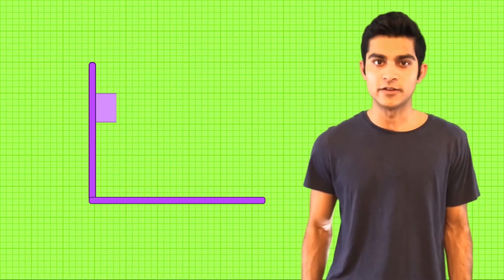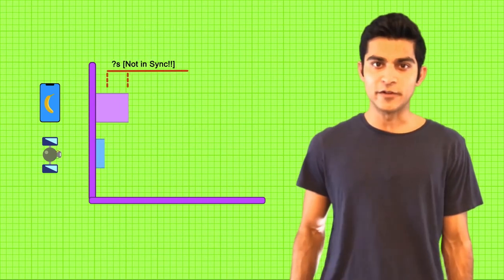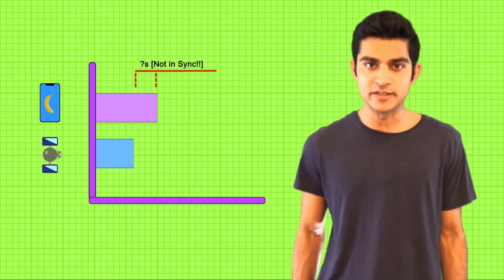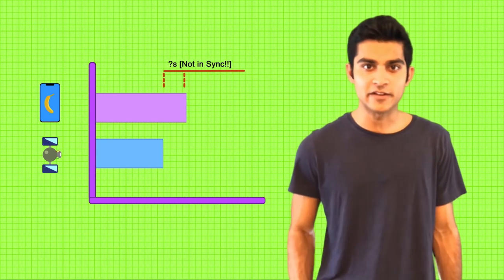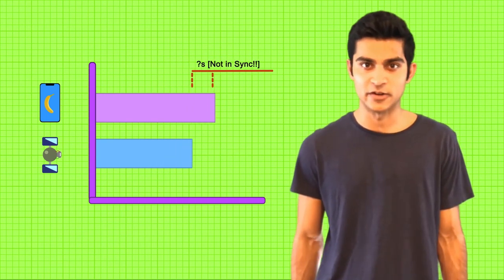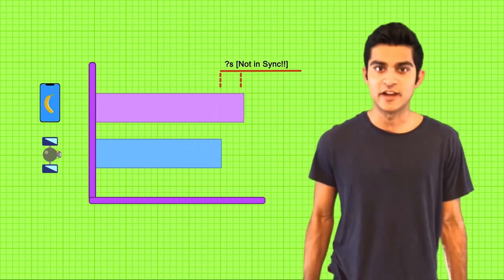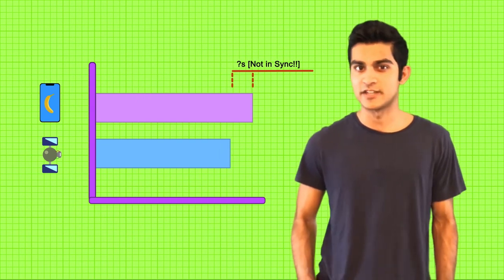This can only work though if your phone clock is perfectly in sync with GPS satellite clocks. Even if your phone's clock is out of sync by 10 millionths of a second, it can throw your calculated distance off by 3 kilometers. And because your phone doesn't have an atomic clock, it will definitely be out of sync by some amount.